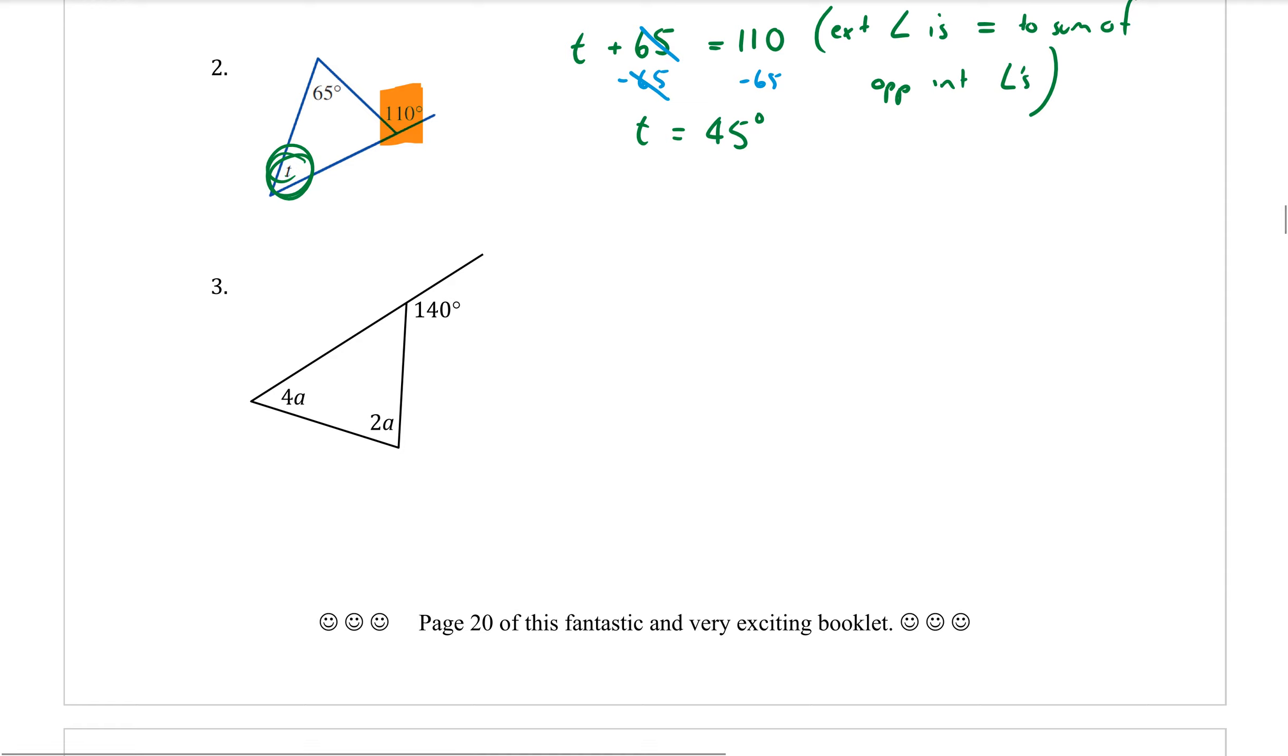Question three. Getting into a slightly harder question here. We have our two interior angles here and they both have A in them. So we want to add those two interior angles together: 4A plus 2A.